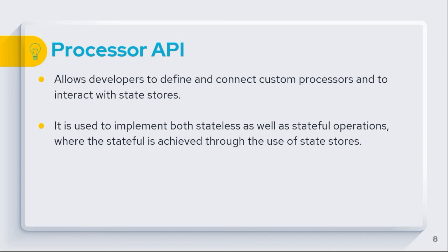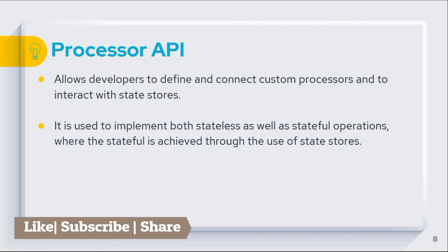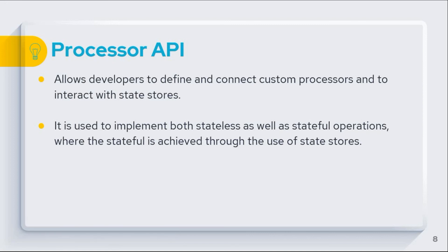The Processor API allows developers to define and connect custom processors and to interact with state stores. It can be used to implement both stateless and stateful operations, where stateful operations are achieved through the use of state stores. In the next videos, I'm going to show the practical implementation of stream processing using both ways — the DSL and the Processor APIs. Thank you for watching.